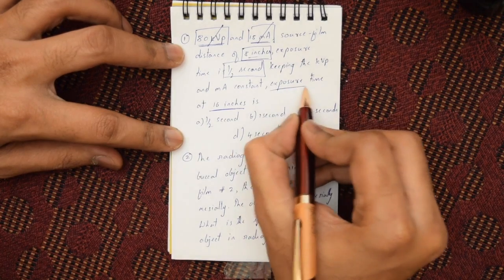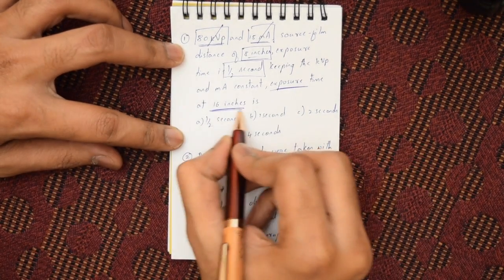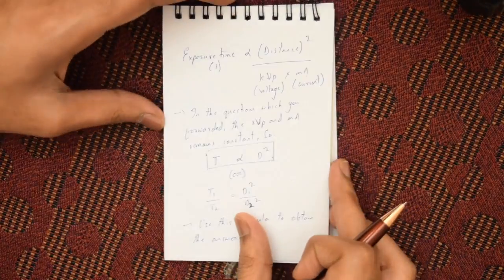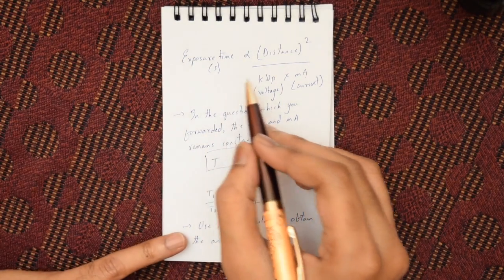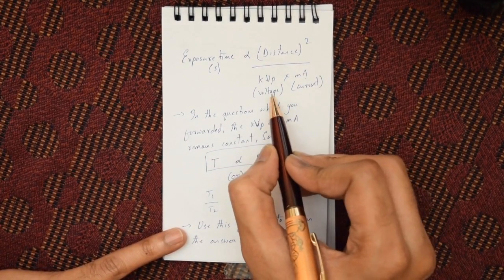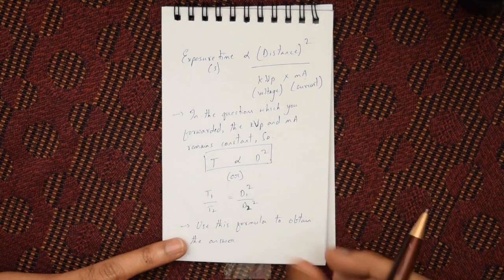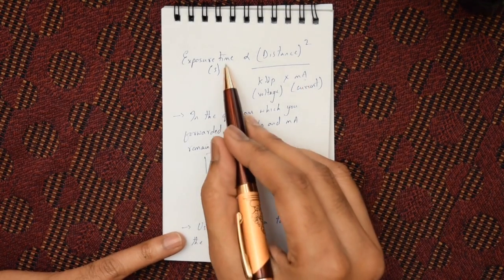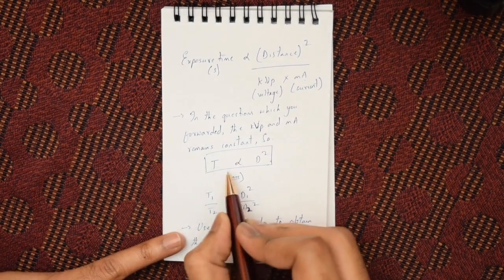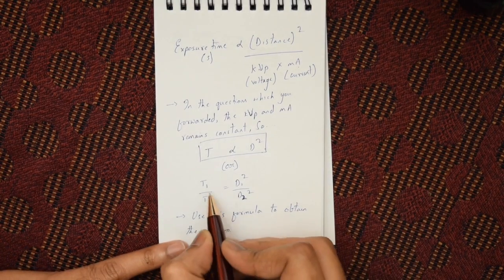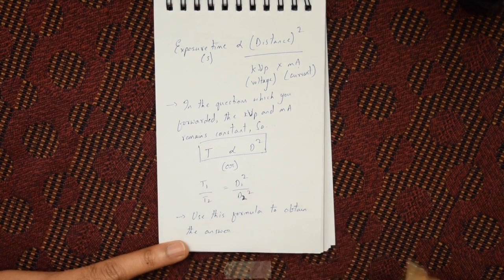Let's understand the relation between exposure time and source film distance. The formula given in White and Pharoah states that exposure time (in seconds) is directly proportional to the square of the distance and inversely proportional to tube voltage and tube current. Since kVp and mA are constant, exposure time is directly proportional to the square of the distance: T1/T2 = (D1/D2)².